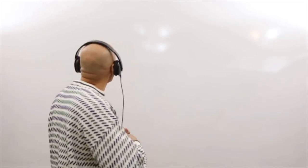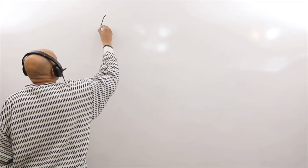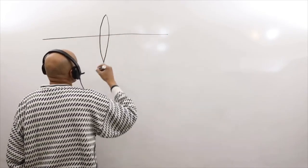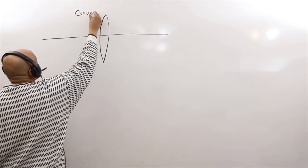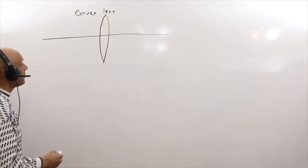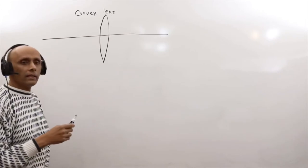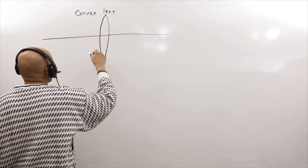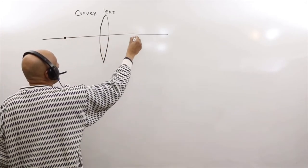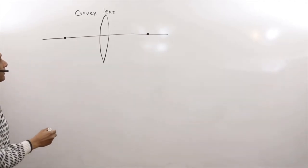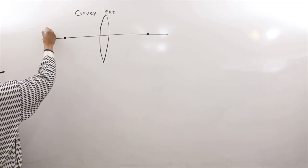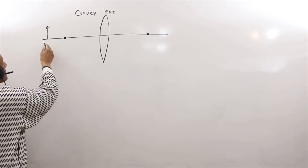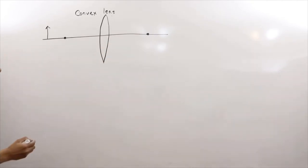We'll start off with a convex lens — here's a convex lens, it's supposed to be thin, and here's our central axis of the lens. The one thing you have to know is that when you're looking at thin lenses, the focal point is actually symmetric, so I'm going to assume they're symmetric. The object is what we're trying to imagine — there's an object right here, and this arrow represents the object.